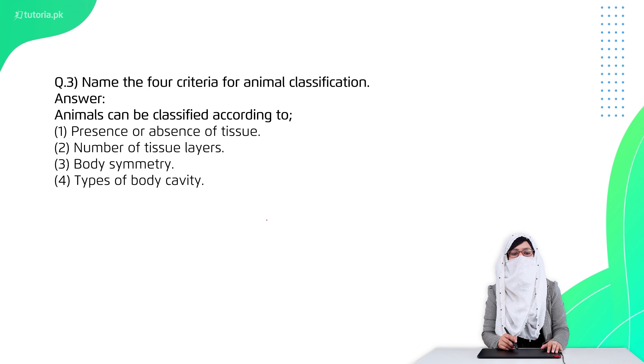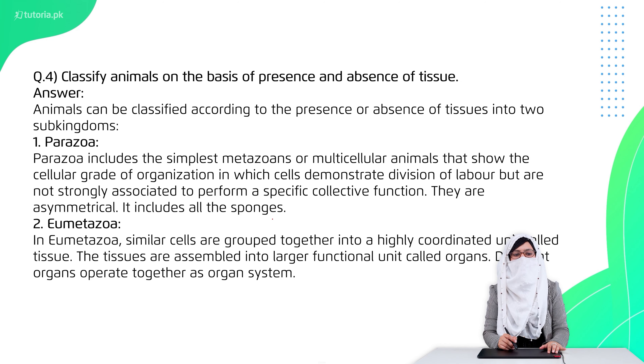Question 3 is: name the four criteria for animal classification. Animals are classified by the presence and absence of tissues, number of tissues, body symmetry, and types of body cavity.